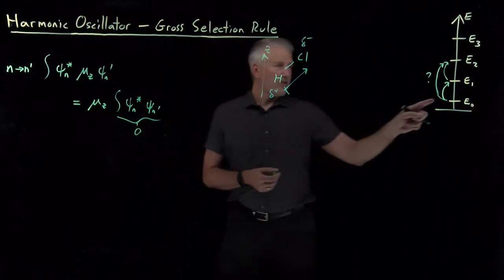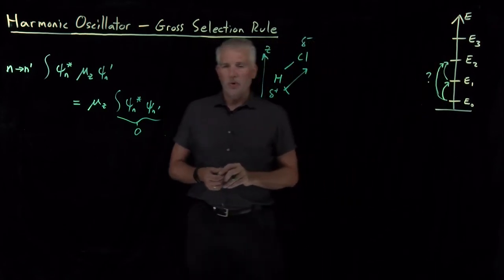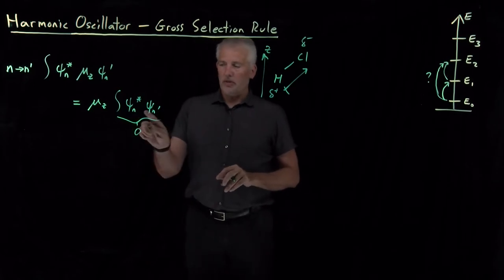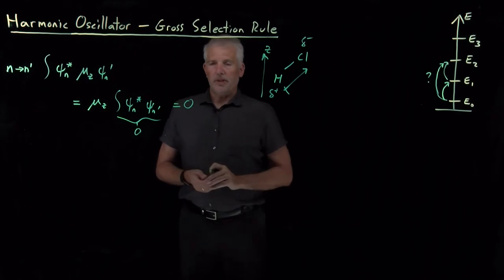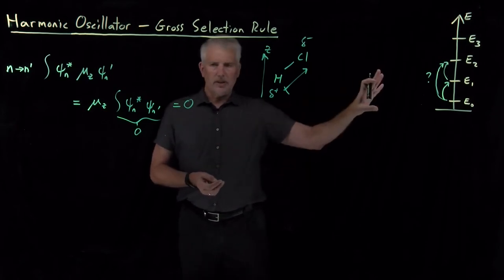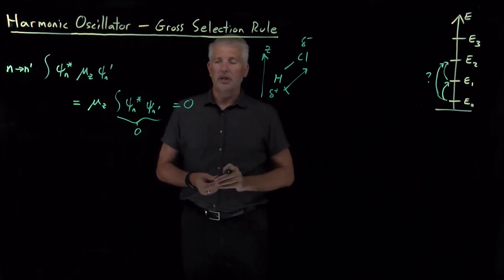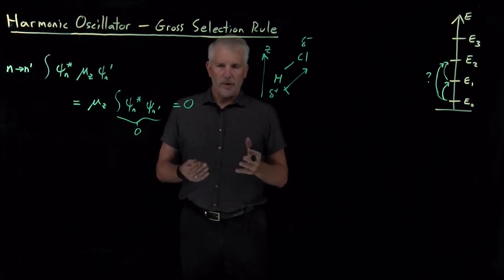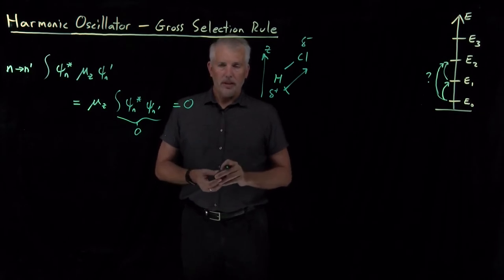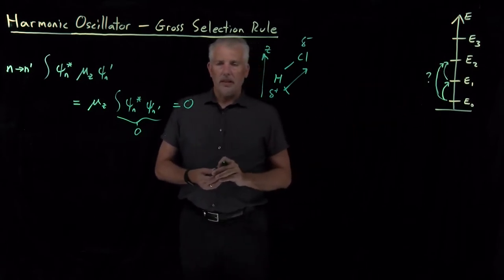That integral is guaranteed to be zero because those wave functions are orthogonal to one another. Every pair of wave functions — zero and one, zero and two, one and two — are mutually orthogonal. So this integral is guaranteed to come out to zero, meaning the whole transition dipole moment must be zero. That suggests that none of these transitions are allowed, and we can't use light to excite vibrational transitions in molecules. But we know that's not true — infrared light is absorbed by diatomic molecules to excite vibrational transitions.